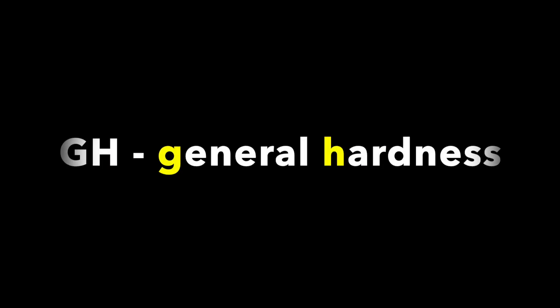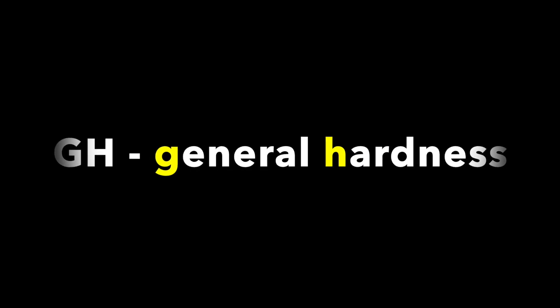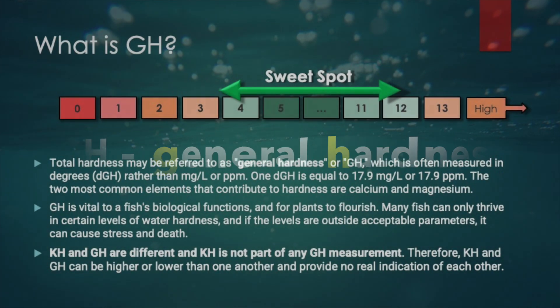Water general hardness, or gH, is the concentration of calcium and magnesium ions in a freshwater aquarium or pond. gH is usually determined by your water source but can be easily adjusted with commercial products. Ideally, freshwater aquariums and ponds have a gH between 4 to 12 dGH, or 70 to 140 ppm.